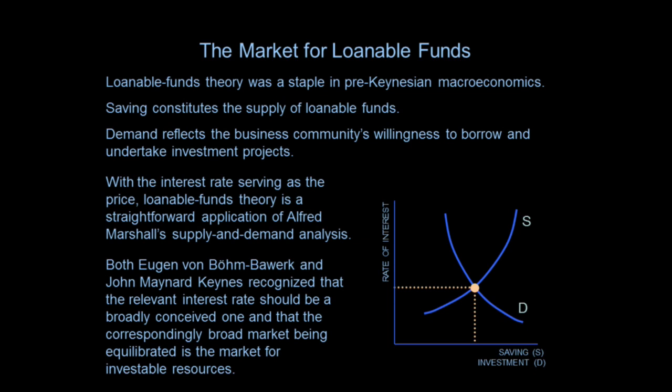Straightforwardly, supply and demand looks like that. And it's significant that this market is very broadly conceived — it's not just the supply and demand for bank loans, but for investable funds generally. Any way that savings of the individual income earner is put in the hands of investors through financial markets constitutes the supply, and the demand for loanable funds. I label it 'investable resources.' Both Keynes and Böhm-Bawerk, the Austrian and the Keynesian, understood the market in that way. That's the way Dennis Robertson intended it — it's a macro concept.